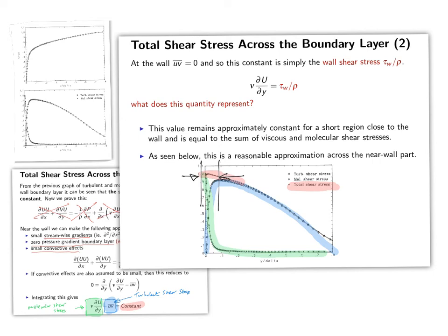And the final thing to note is that at the wall, where the only non-zero shear stress is from the molecular shear stress, the green line, all of the wall shear stress, then, is coming from the molecular shear stress. So, the expression for wall shear stress, tau wall, is simply the molecular shear stress. And this is something that we come back to later on.